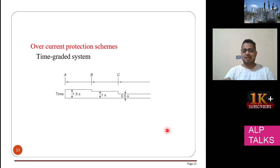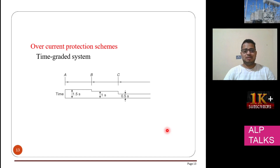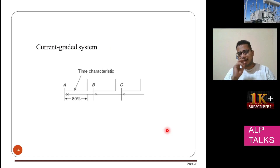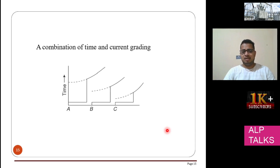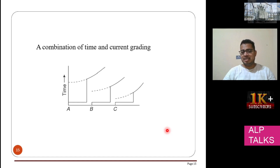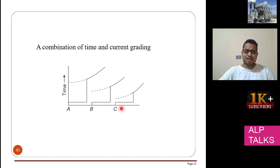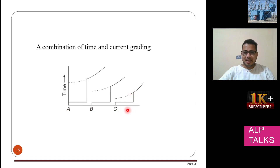This is one of the better techniques. You also have current grading: if 80% of the current threshold is reached, A operates; if it exceeds further, B operates; and if even higher, C operates. There is also a combination of time and current grading. A operates for low current, B for high current, and C for very high current. If the current is very high, the relay needs to operate very quickly — that is what the graph shows.